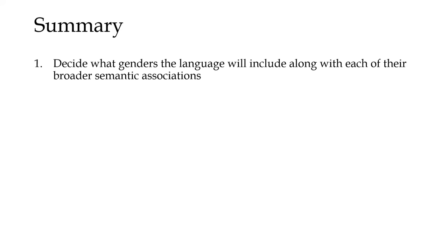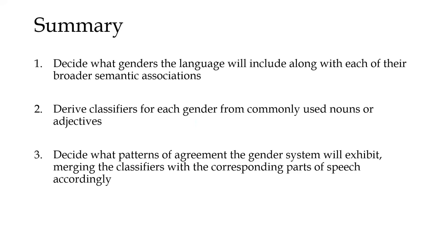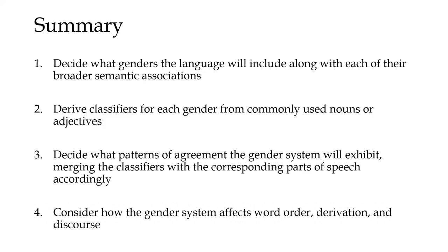So in summary, if you want to create a gender system for a conlang: decide what genders the language will include along with each of their broader semantic associations; derive classifiers for each gender from commonly used nouns or adjectives; decide what patterns of agreement the gender system will exhibit, merging the classifiers with the corresponding parts of speech accordingly; and consider how the gender system affects word order, derivation, and discourse.